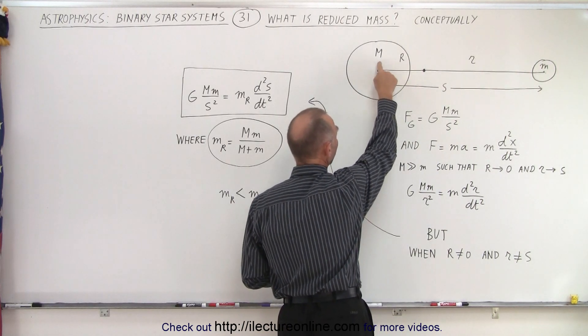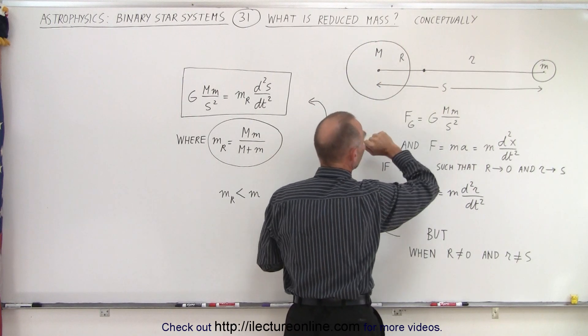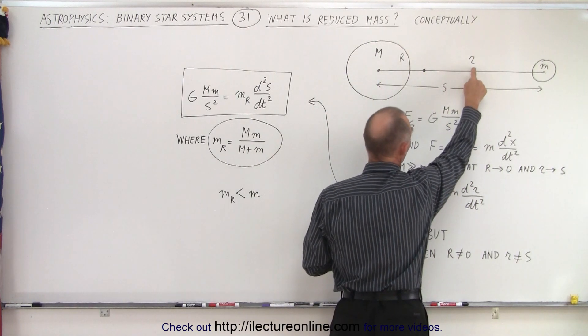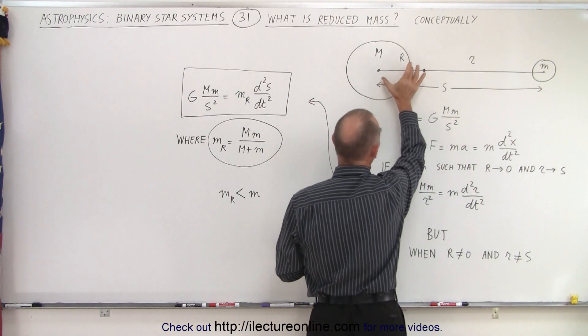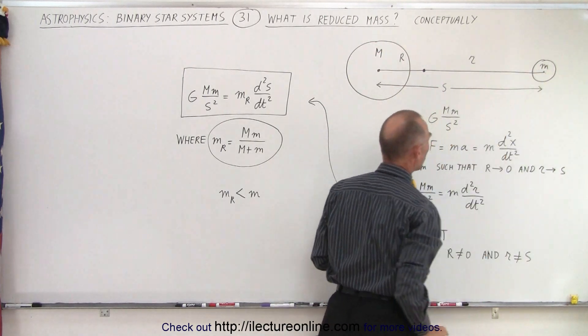Notice I use large capital letters to indicate that these are large or belong to the large object, because here small r is bigger than big R, but R, big R, belongs to the large mass and small r belongs to the small mass.